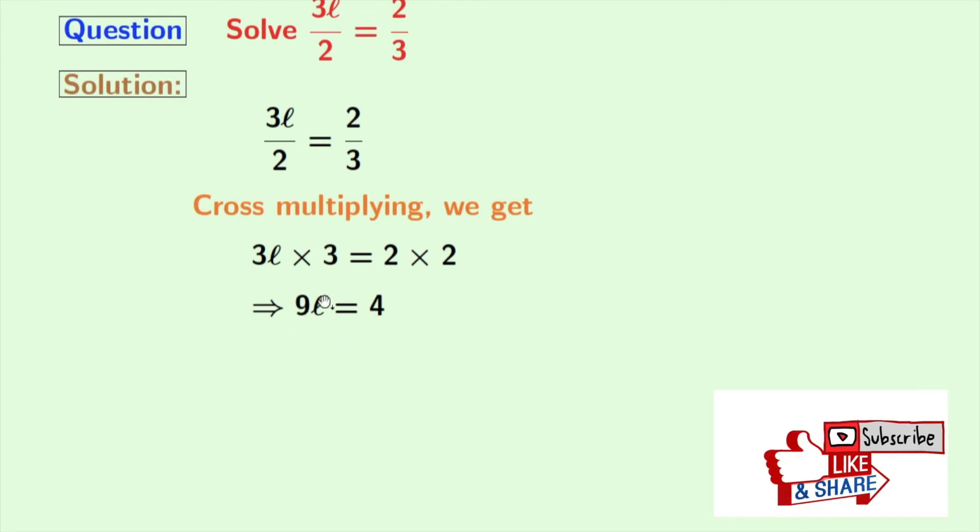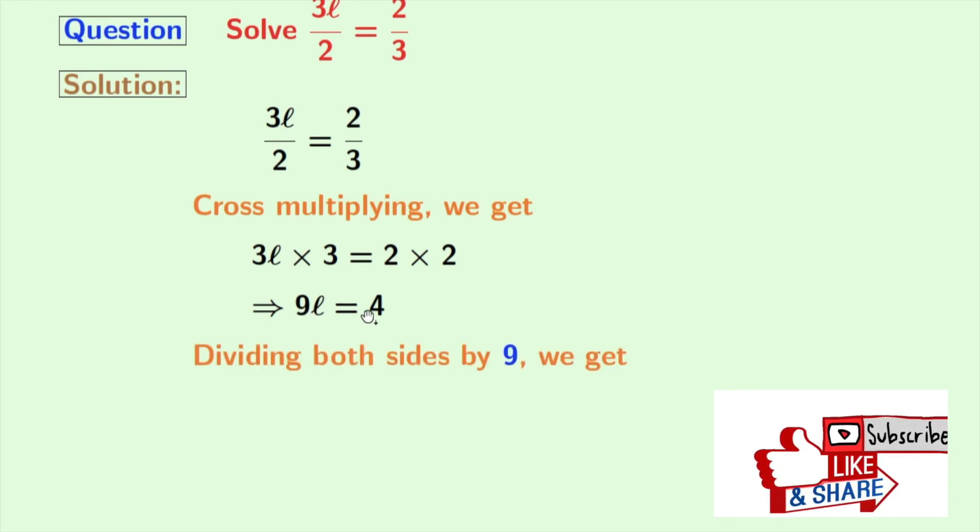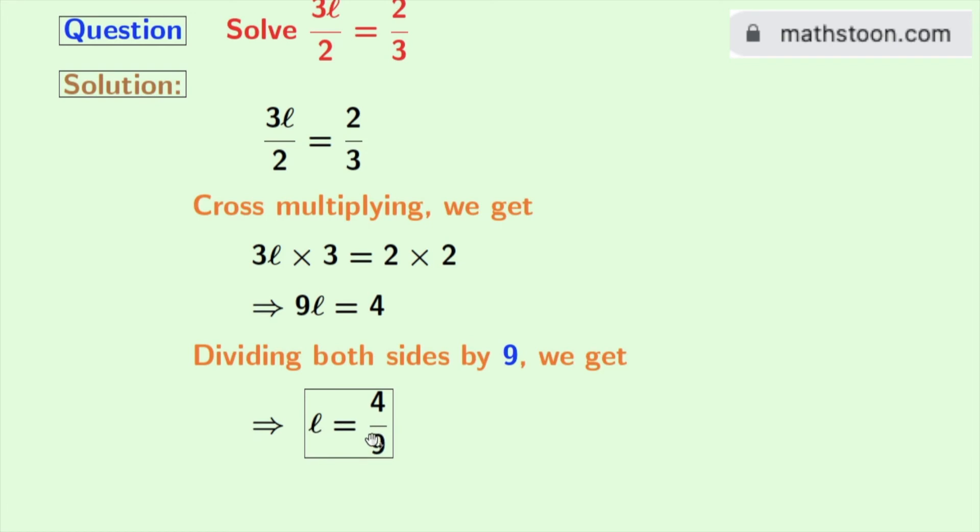Now as the coefficient of L is 9, we will divide both sides by 9. Doing that we get L in the left hand side and in the right hand side, we get 4 by 9.